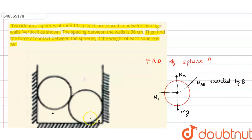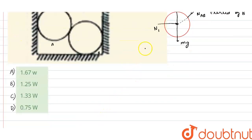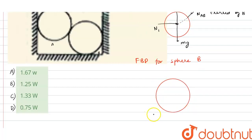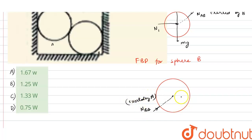For the free body diagram of sphere B: the force Nba acts on it, which is the force exerted by sphere A on sphere B. N3 is the normal reaction force acting on it, and mg acts downward.